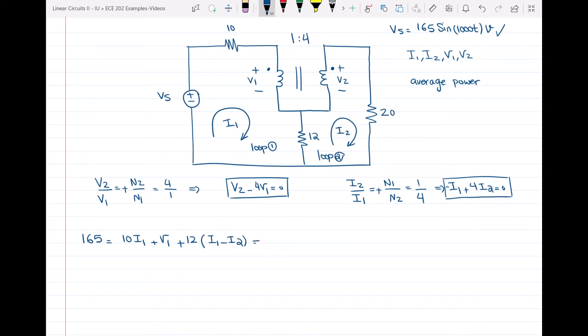If I simplify that, I'm going to have 22I1 minus 12I2. It's 10 plus 12. So 22I1 minus 12I2 plus V1 is equal to 165. This is going to be my third equation.